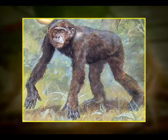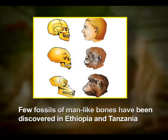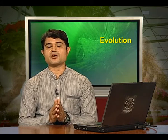Now we will discuss the origin and evolution of man. About 15 million years ago, primates called Dryopithecus and Ramapithecus were existing. They were hairy and walked like gorillas and chimpanzees. Ramapithecus was more man-like while Dryopithecus was more ape-like. A few fossils of man-like bones have been discovered in Ethiopia and Tanzania. These revealed hominid features, leading to the belief that about 3 to 4 million years ago, man-like primates walked in eastern Africa. They were probably not taller than 4 feet, but walked upright.